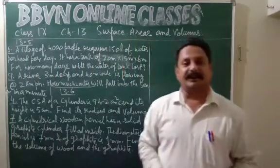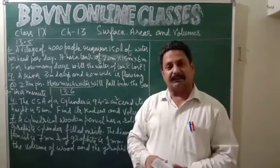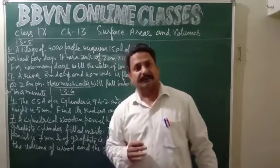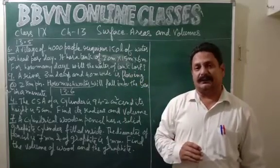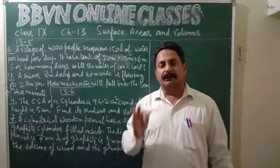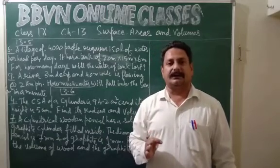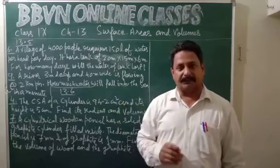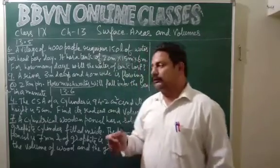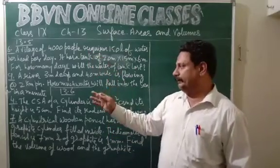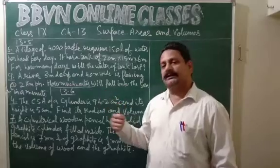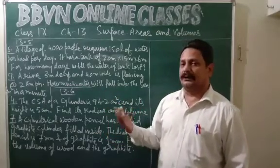Good morning class 9, welcome back. We were in chapter 13, surface areas and volumes. We have discussed curved surface area and total surface area of all the solid shapes in our syllabus: cube, cuboid, cylinder, cone, and sphere. Now we are moving into volumes of the solids. I have taken a few questions from exercise 13.5 and 13.6, which are based on the volumes of solid shapes.